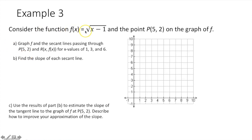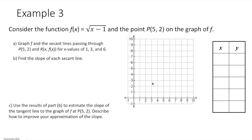Example 3: consider the function f(x) = √(x − 1) and the point P at (5, 2) on the graph of f. Graph f and the secant lines passing through P and Q at x values of 1, 3, and 6. To graph this square root function, I create a t-table. It's of the form y = a√(x − h) + k, so our starting point is at (h, k), which is (1, 0). I plot that point and pick x values that give perfect squares under the radical.